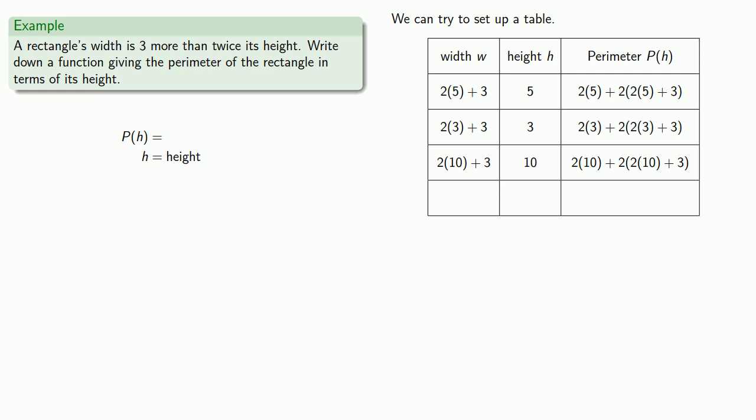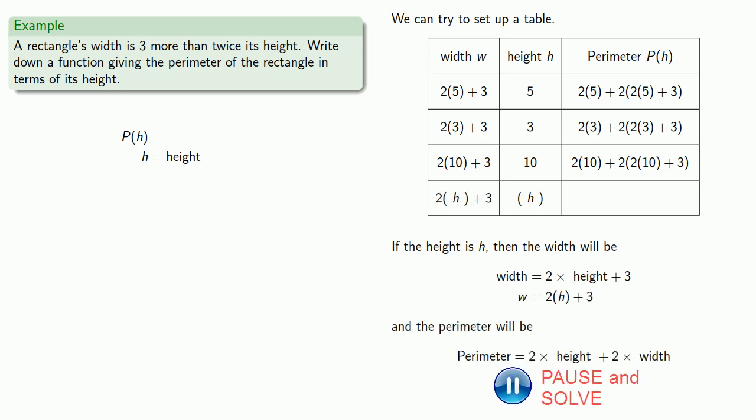And finally, let's try to generalize. If our height is h, then the width will be 2h + 3. And the perimeter will be 2h plus 2 times (2h plus 3). And so our perimeter function looks like it's going to be 2h plus 2(2h + 3). And we could do a little bit of algebra to clean this up, but we don't have to.